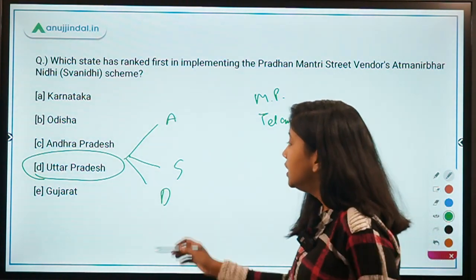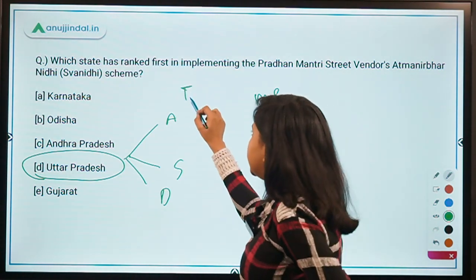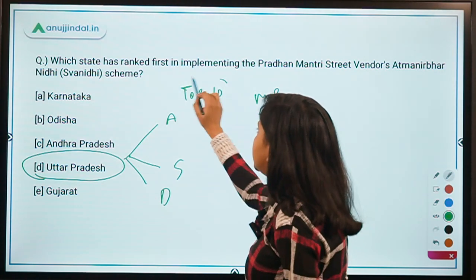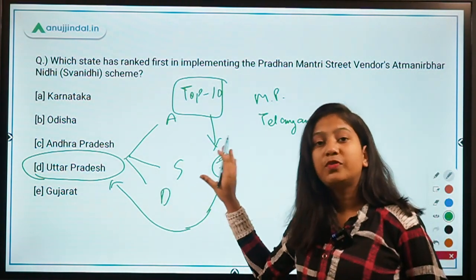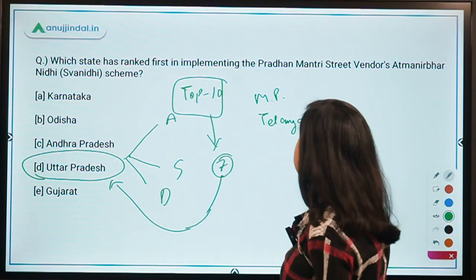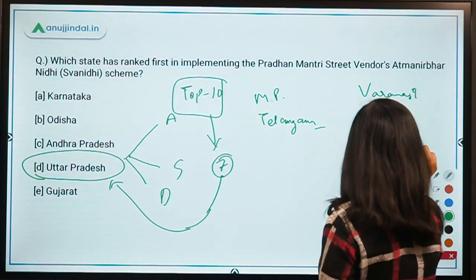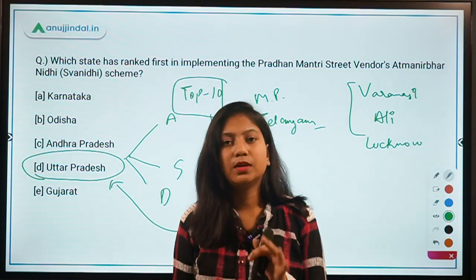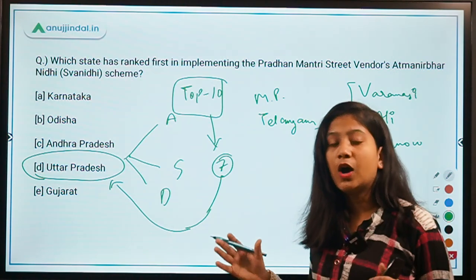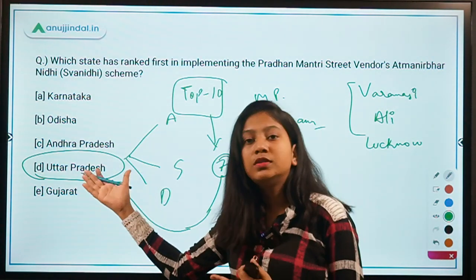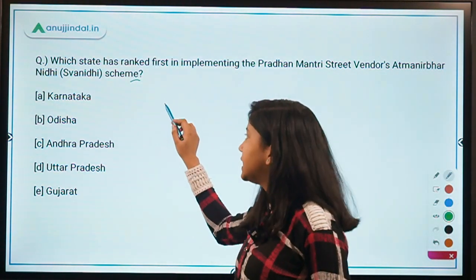A city-wise list was also released. Out of the top 10 cities, seven cities were from Uttar Pradesh alone — which shows how well UP has performed in implementing the SVANidhi scheme. Under this scheme, a working capital loan of Rs. 10,000 is provided to street vendors. That's all for this question.